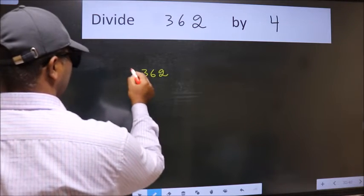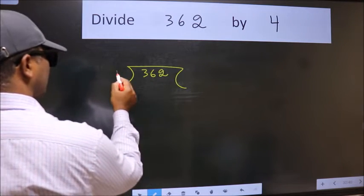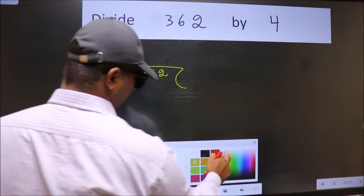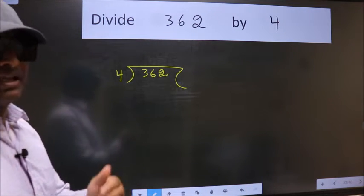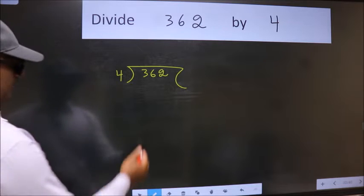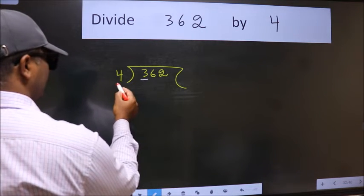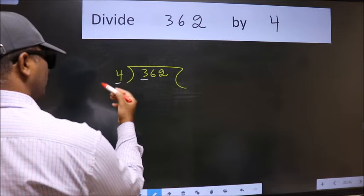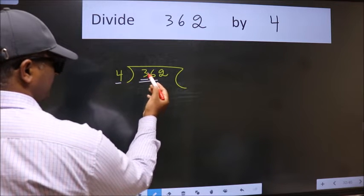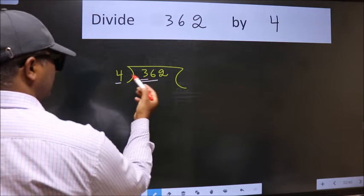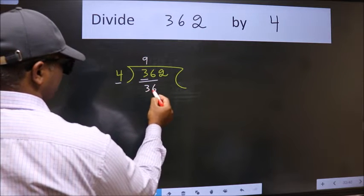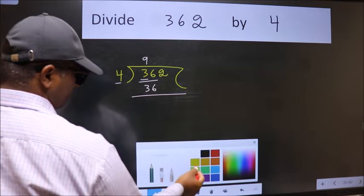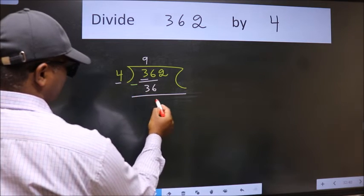362 here, 4 here. This is your step 1. Next, here we have 3 and here 4. 3 is smaller than 4, so take two numbers: 36. When do we get 36 in 4 table? 4 nines 36. Now we should subtract. We get 0.